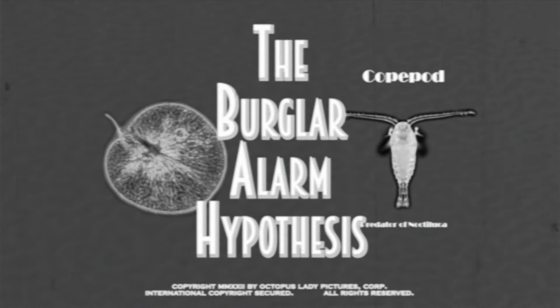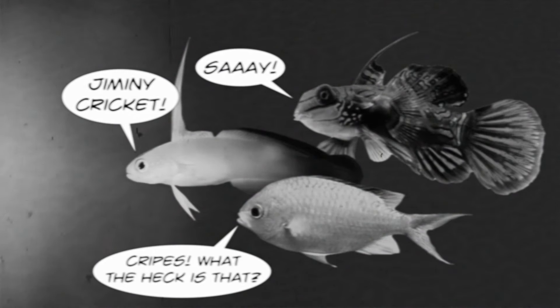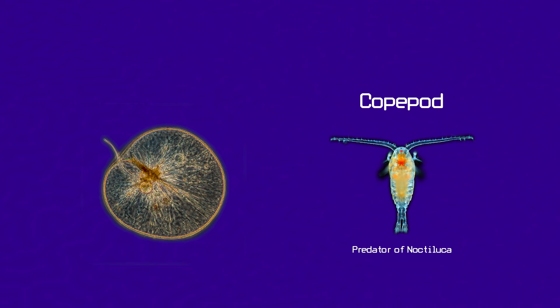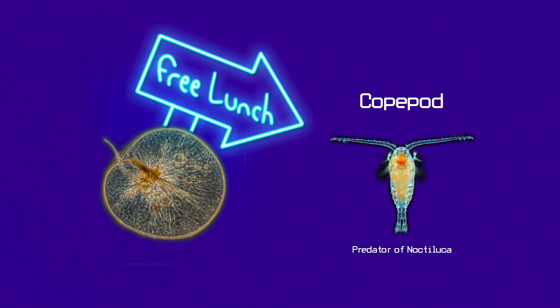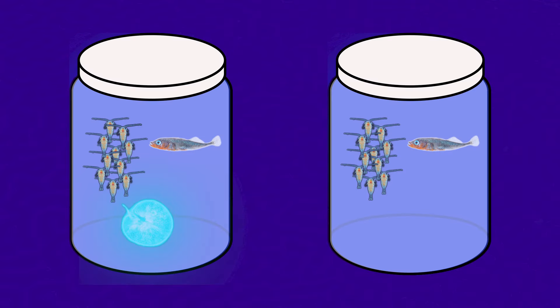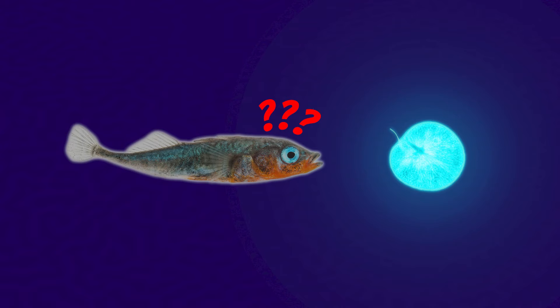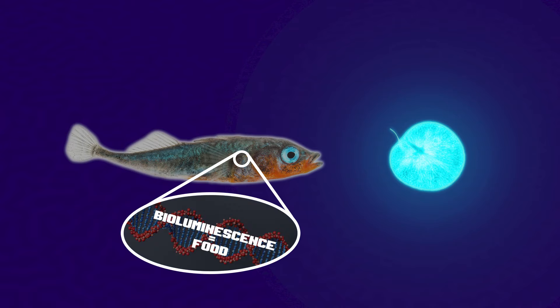It was actually all the way back in 1943 that a scientist suggested the burglar alarm hypothesis, which hypothesizes that bioluminescence in dinoflagellates is not for scaring off predators, but for attracting the attention of the predators of the predator. In other words, when threatened by, say, a copepod, dinoflagellates light them up with a neon sign that flashes 'free lunch.' And indeed, a study done in the early 90s showed that when copepods and fish that eat copepods were placed in jars with bioluminescent and non-bioluminescent dinoflagellates, the fish ate way more copepods in the bioluminescent jar compared to the other jar.